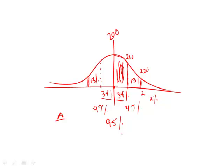So in Quantity A, when they say the probability that the value of Y is greater than 220, that's a tiny probability — just a fraction, it's 1/50 or about 2%. Whereas Quantity B is 1/6, which is roughly 16%. You can see that's much much bigger than this 2%, so answer choice B is bigger.